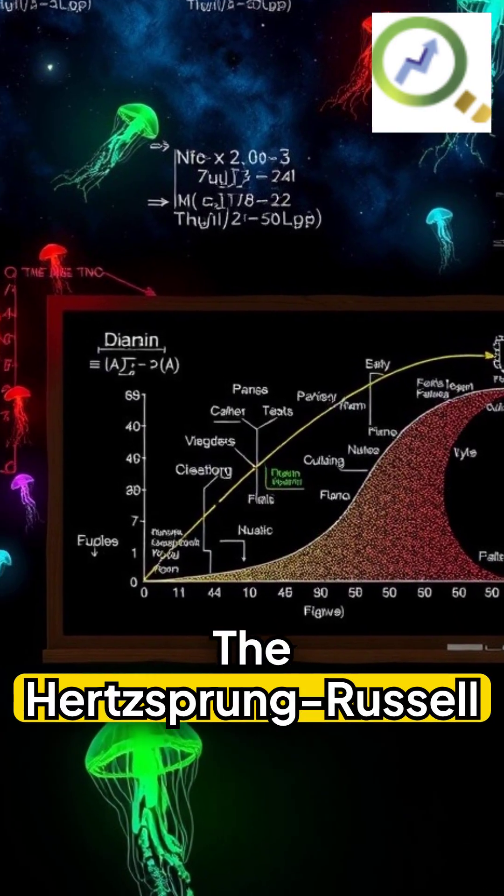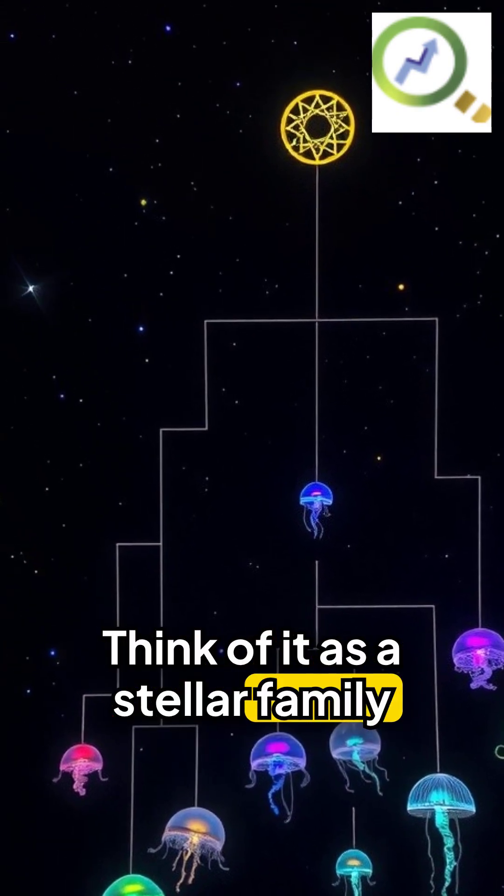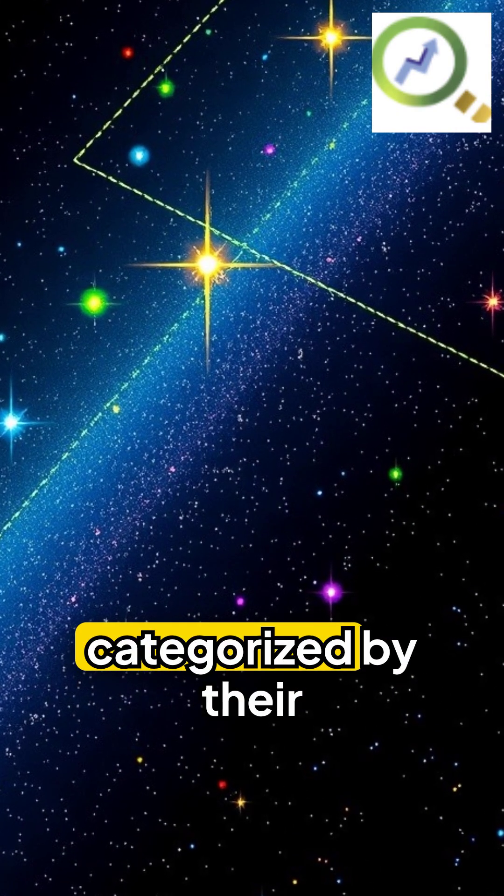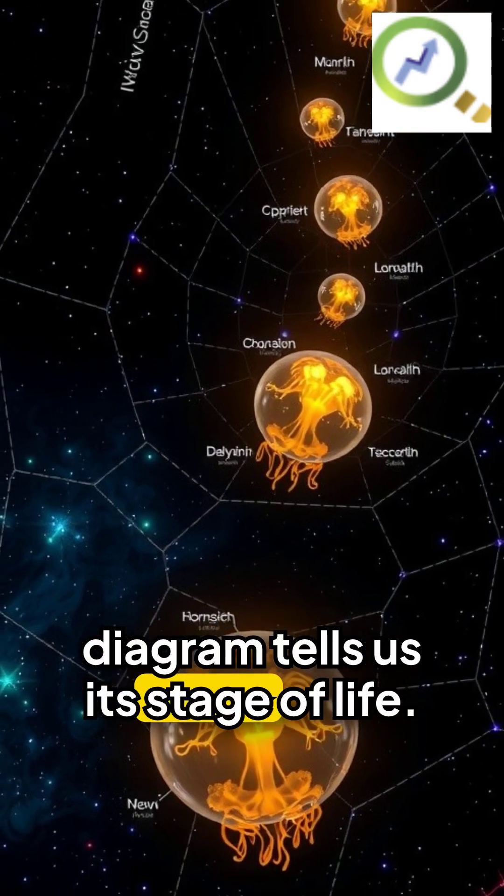Our first clue, the Hertzsprung-Russell diagram, or HR diagram. Think of it as a stellar family portrait, where stars are categorized by their brightness and color. A star's location on this diagram tells us its stage of life.